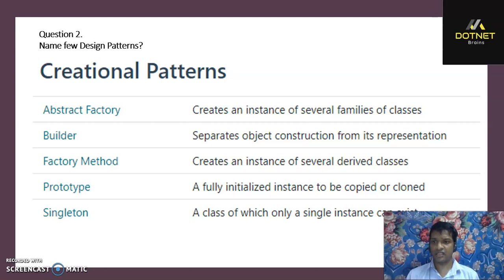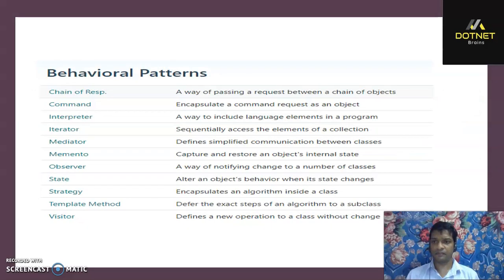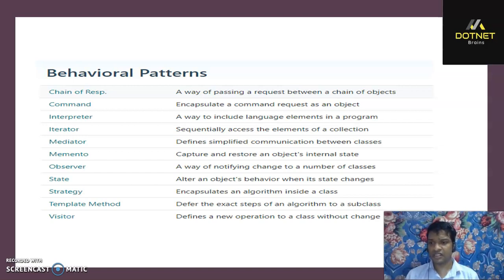Question two: name a few design patterns. Creational patterns include abstract factory, builder, factory method, prototype, and singleton — with singleton being a hot topic. Structural patterns include adapter, bridge, composite, decorator, facade, flyweight, and proxy. We'll discuss facade and proxy in detail. Behavioral patterns include chain of responsibility, command, interpreter, iterator, mediator, observer, strategy, and visitor. We'll also cover the observer pattern.